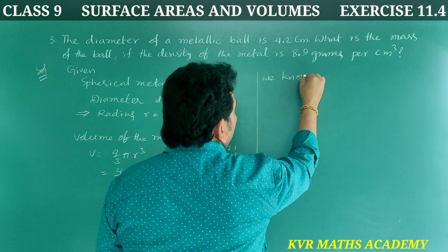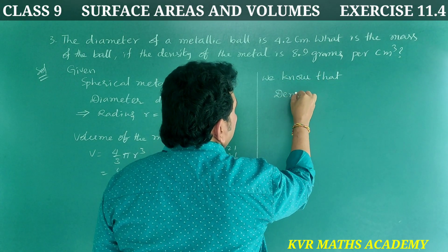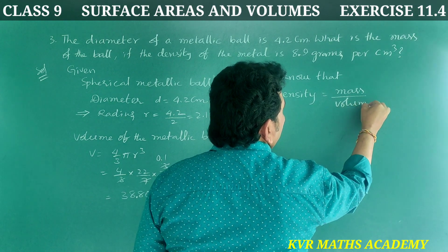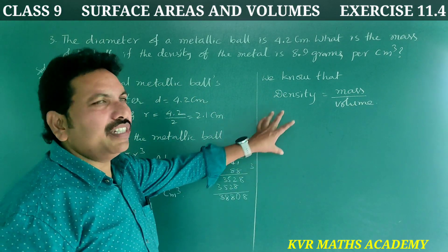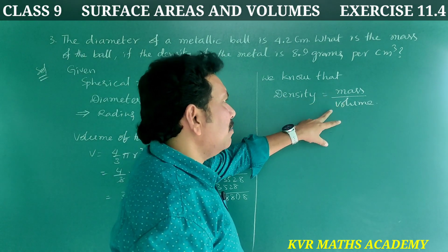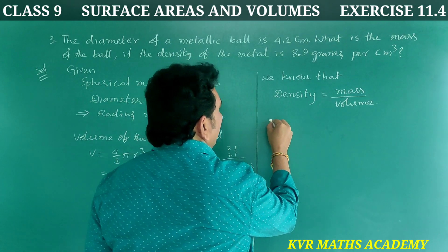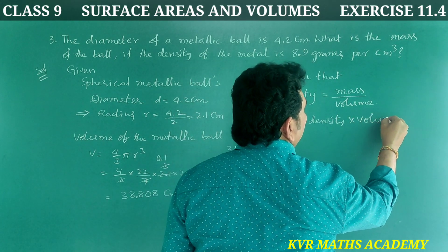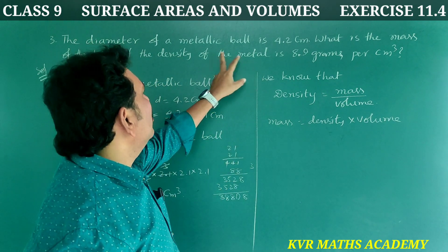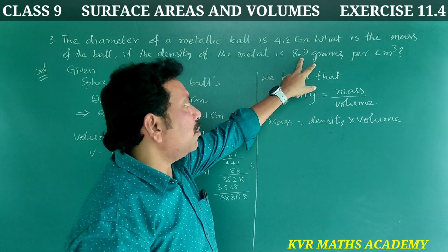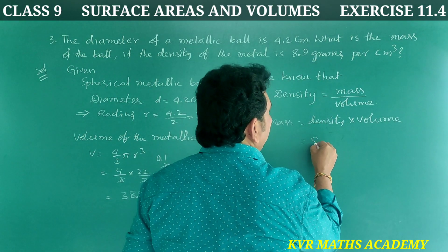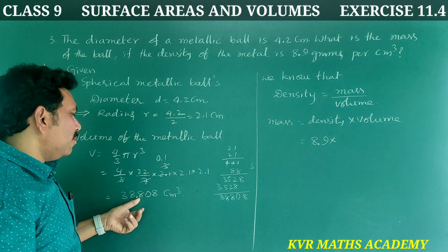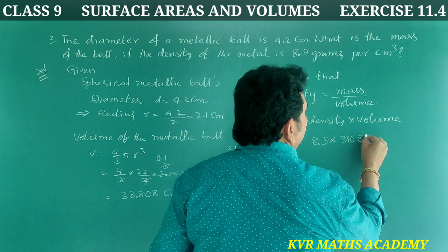We know that density is equal to mass by volume. Therefore, mass is equal to density into volume. Density given is 8.9 grams per centimeter cube. So mass is equal to 8.9 into 38.808.